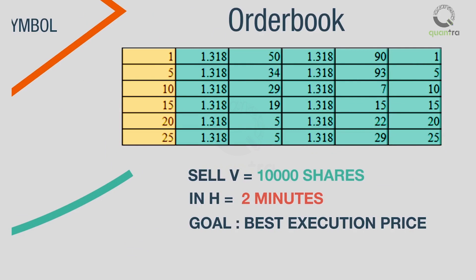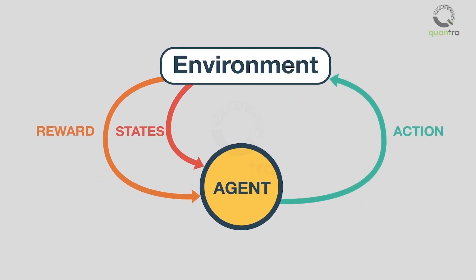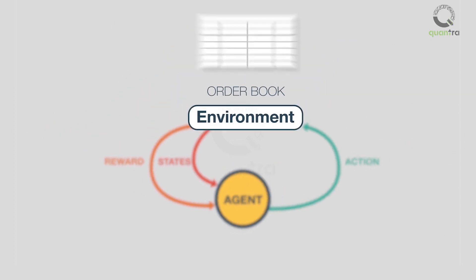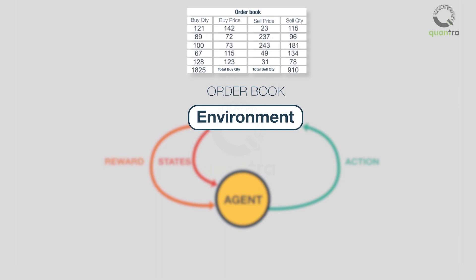Let us see how the researchers represented this as a reinforcement learning problem. The environment here is made up of simulated market-like conditions which maintain the order book, where different order types are coming in and going out and the order book continues to change. This is a dynamic space changing outside the control of the algorithm or the trader.